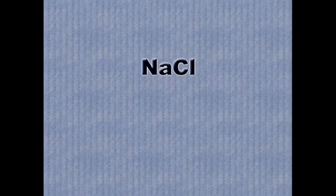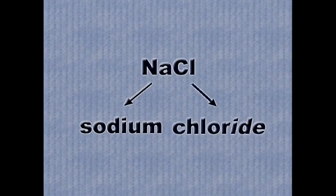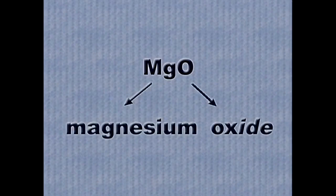By now you probably recognize the chemical formula of ordinary table salt, NaCl. First name the cation: sodium. Then name the anion: Cl is chlorine, which becomes chloride when you change the ending to -ide. The name for NaCl is sodium chloride. Next, what is the name of the compound MgO? If you said magnesium oxide, you're right.